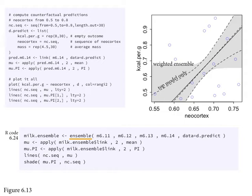The intercept-only model has a slope of zero, so it makes a horizontal line prediction between kilocalories per gram of milk and neocortex percent. The ensemble captures that — that's why the shaded region includes a slope of zero. So there's more uncertainty carried over with the ensemble. Always. Because it uses all the model predictions. And sometimes, depending on how risk-averse you want to be in your prediction, it'll capture these extremely unlikely but perhaps catastrophic things.